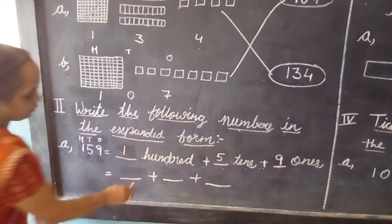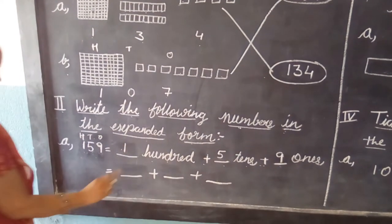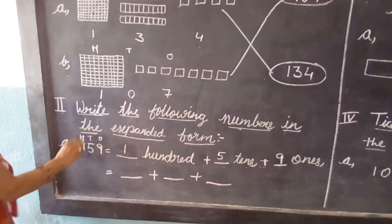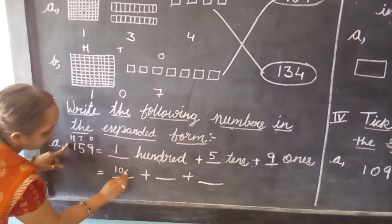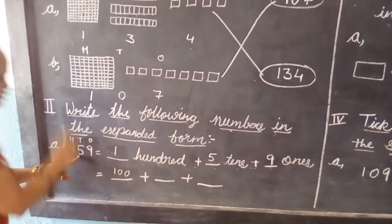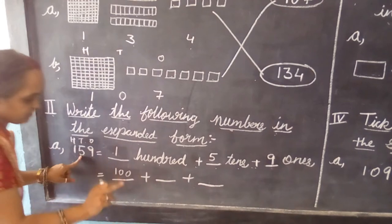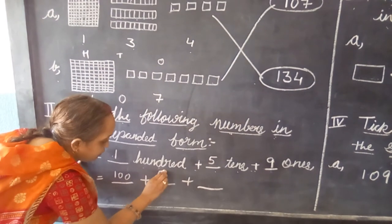And now here we are going to write value form. So here it is 100, so we are going to write 100. Here it is 5 tens, so 5 tens is 50, so we are going to write here 50.